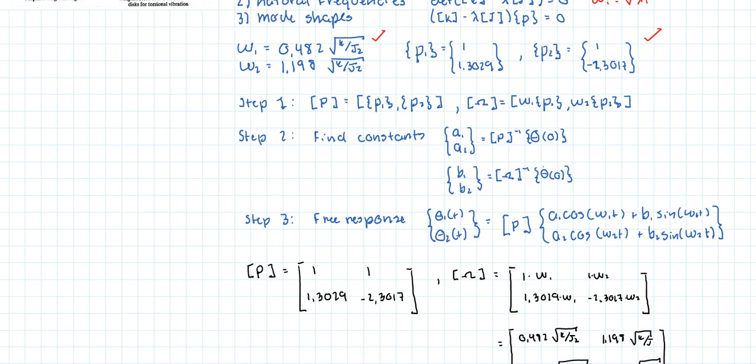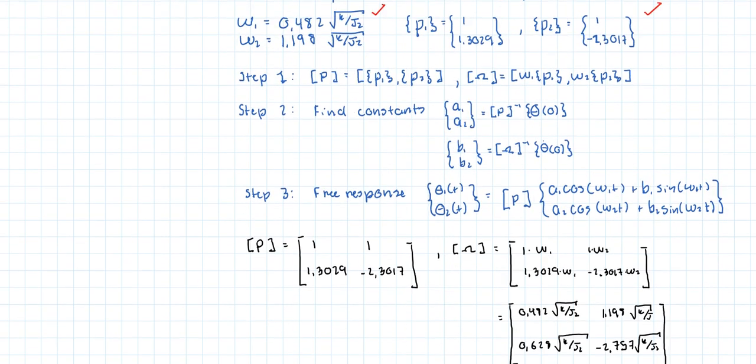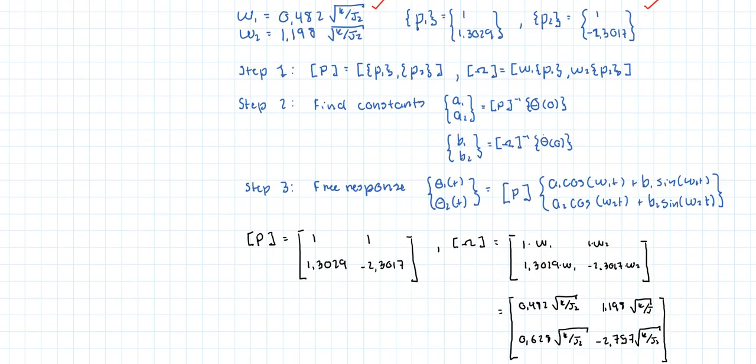Now, in order to find the free response, we need to build the P matrix and the omega matrix. Notice that the omega matrix is the P matrix, but each column is multiplied by the column number's natural frequency. And so for the first column, you're going to multiply every element by the first natural frequency, so on and so forth.